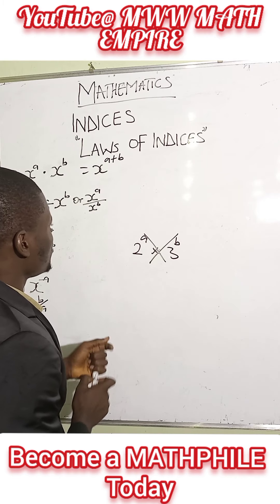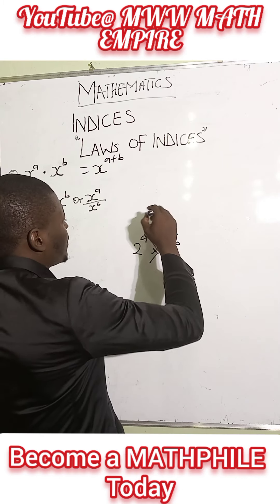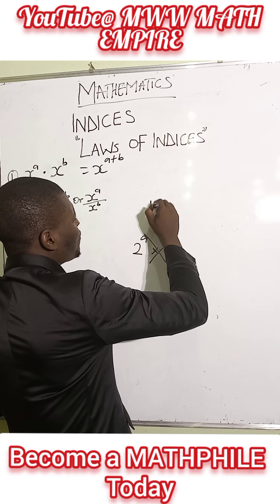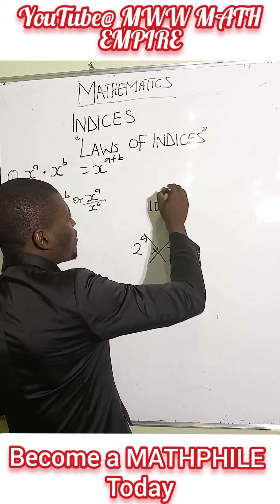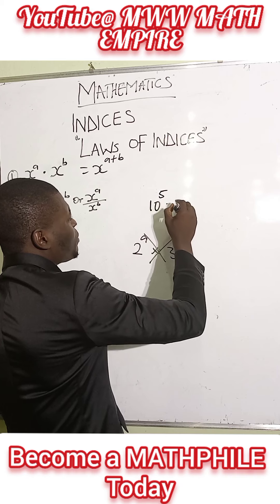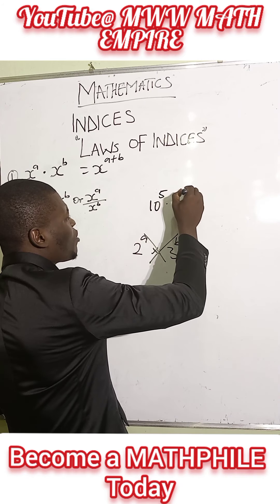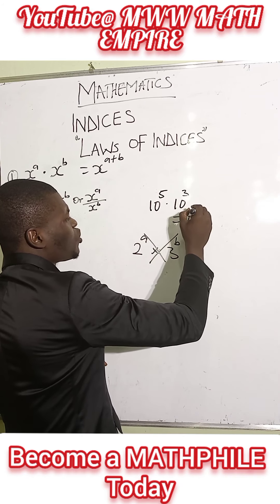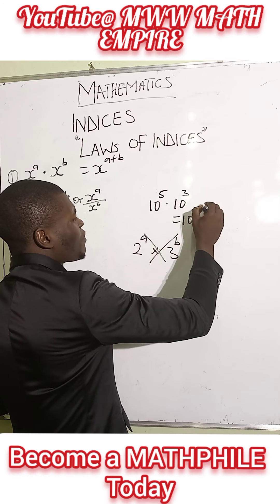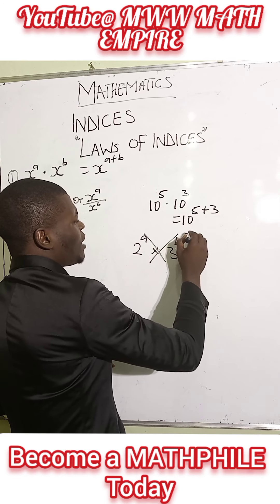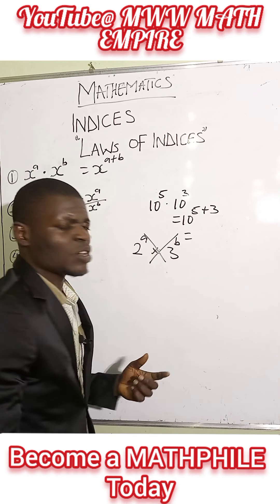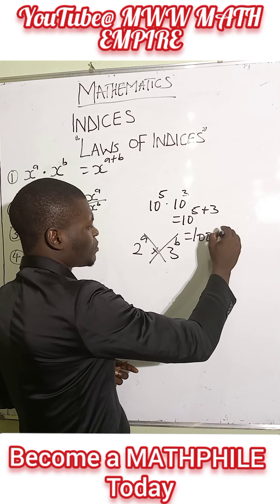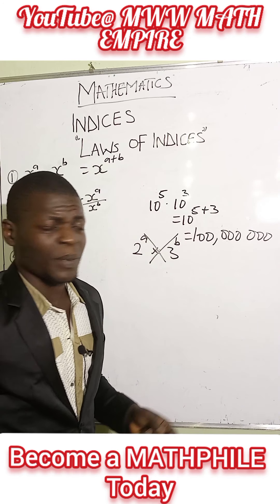Let me use a non-variable to prove this. Take for instance, we have 10 raised to the power of 5 multiplied by 10 raised to the power of 3. This means 10 raised to the power of 5 plus 3, which is 10 to the power of 8, equal to 100 million.